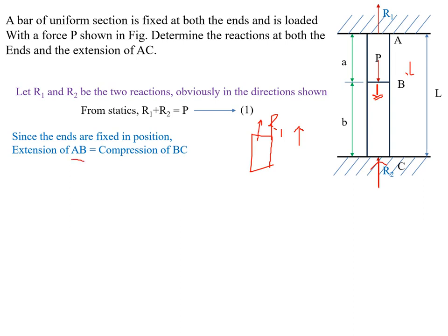Similarly, for the BC member, applying the principle of superposition and considering the downward side, the only net force is the reaction R2. The nature of R2 is compressive, so contraction takes place in BC. Due to the fixed supports, deformation is constrained, giving us: extension of AB equals compression of BC.